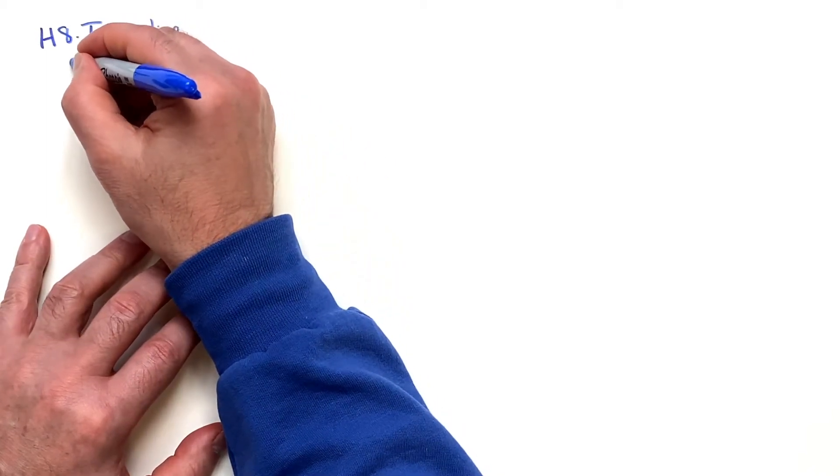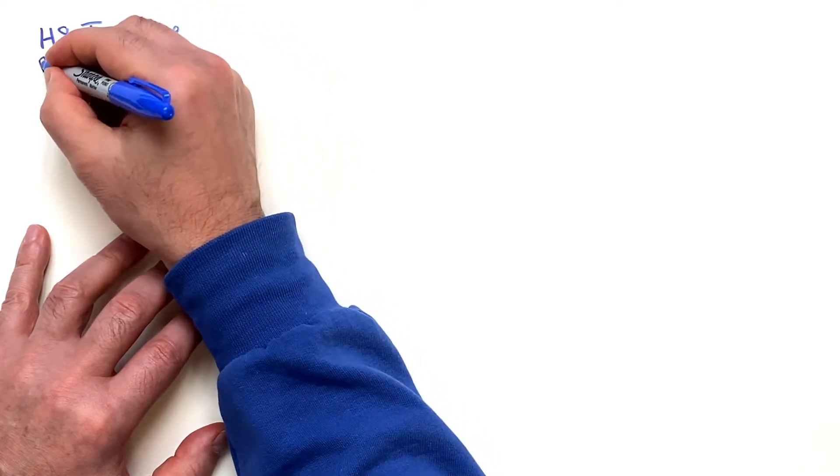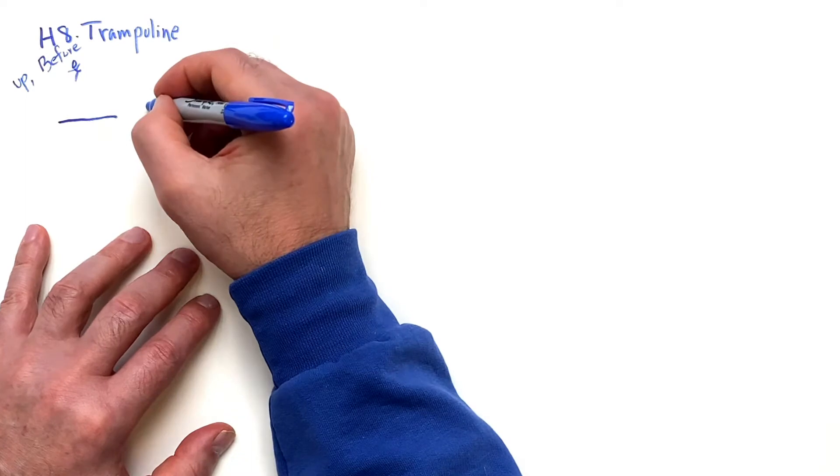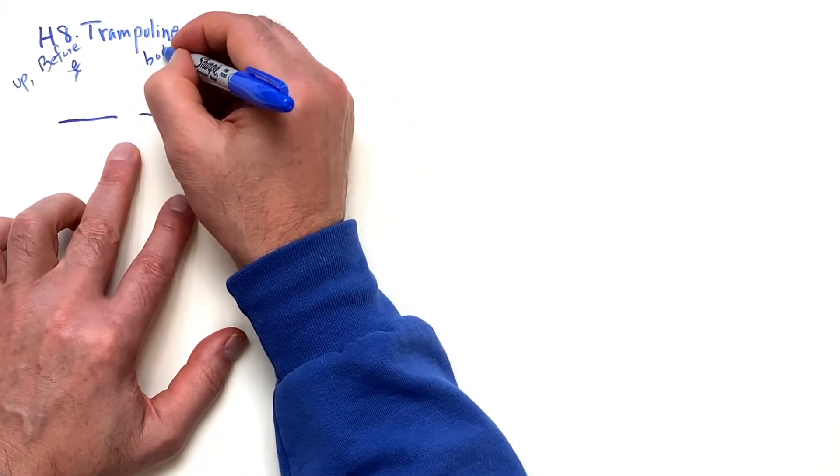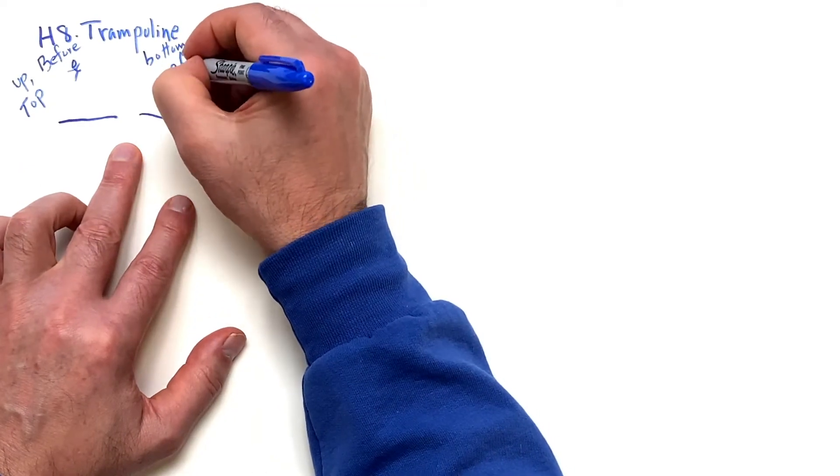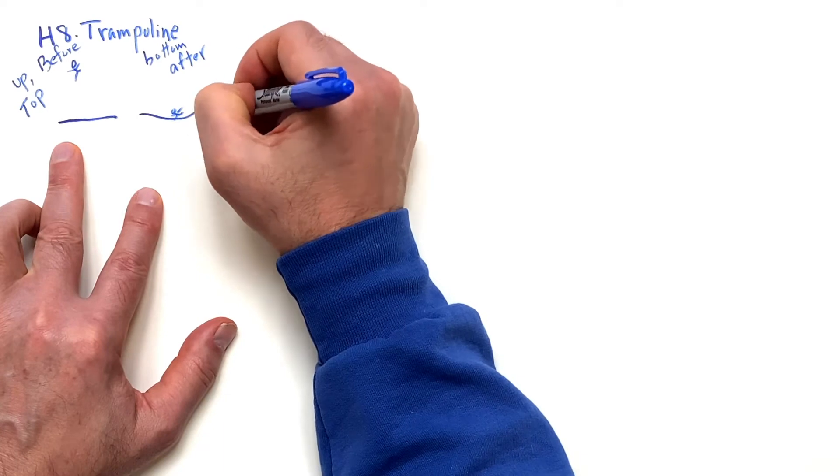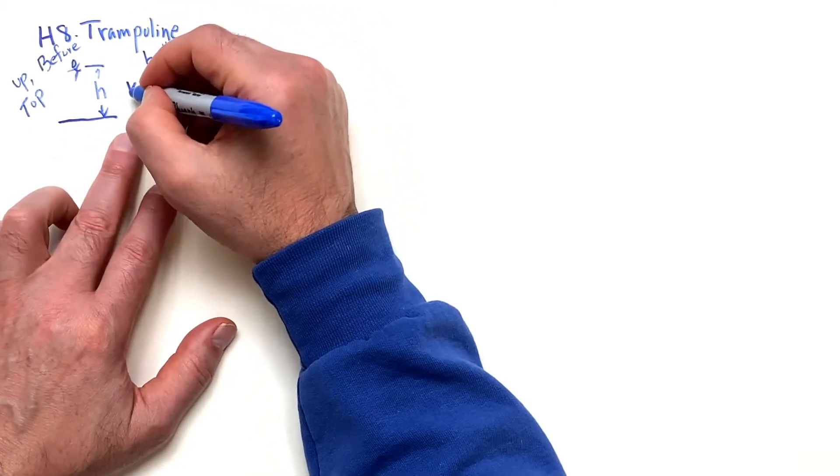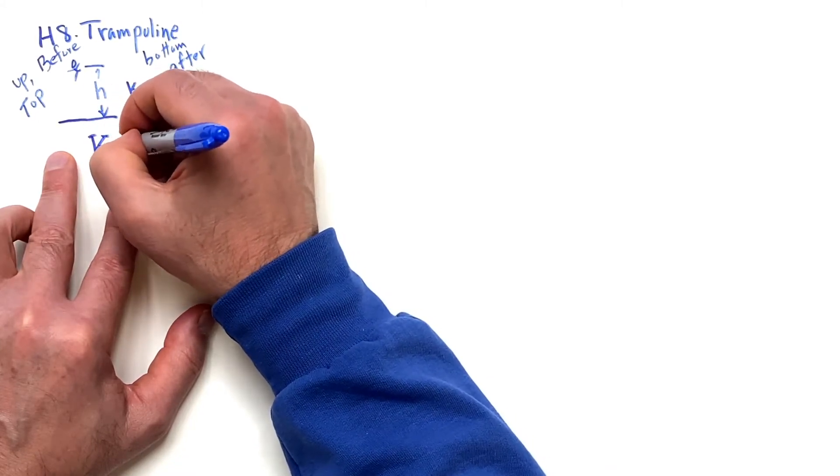Now for the trampoline, you have a person. This is before, or say up position, and then afterwards, this is bottom before up top. And this is bottom, after. And this depression is x. I have the height h to start with, and I have a spring constant. Now this k, I'm having a little trouble with my k's here. Kinetic energy is capital K, one half mv squared.